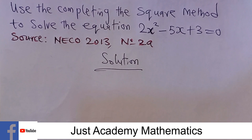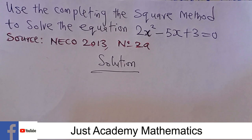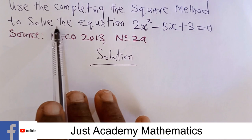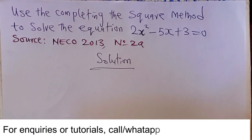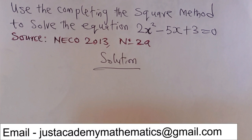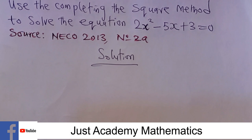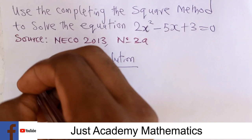Welcome back to Just Academic Mathematics YouTube channel, where we make you a mathematics genius. The question we have today is from NECO 2013, number 2a. We are asked to use the completing the square method to solve the equation. This method has been specified, so we cannot use the formula method, graph method, or factorization method — we just have to use completing the square method.